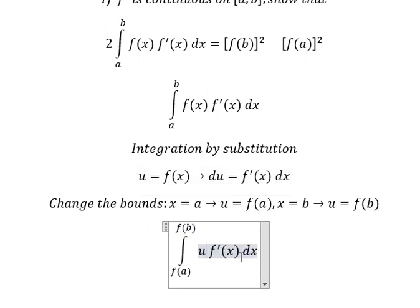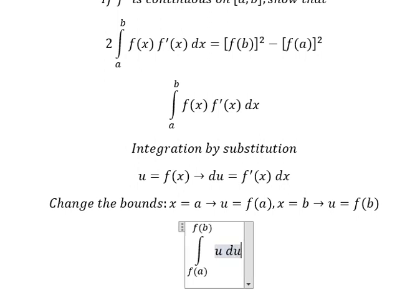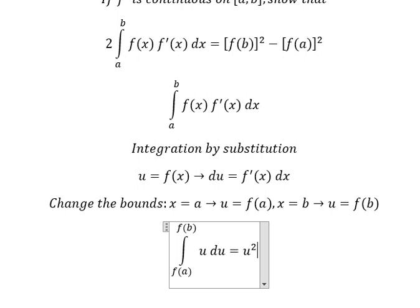This one we change to u. The integral of u gives us u squared over two, and then we put the bounds from f of a to f of b.